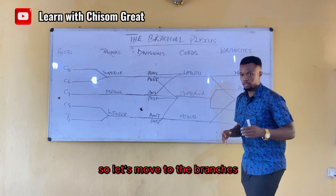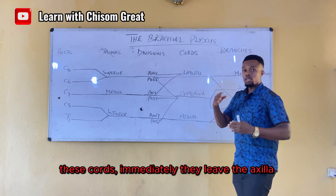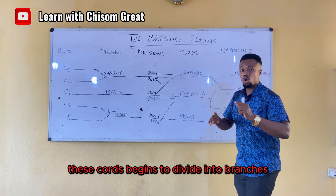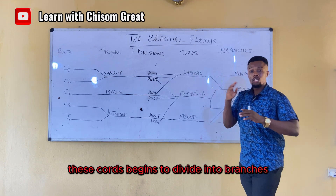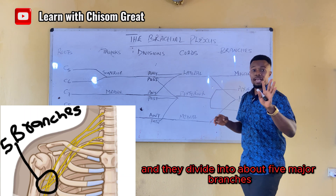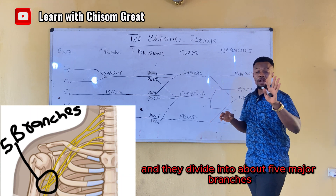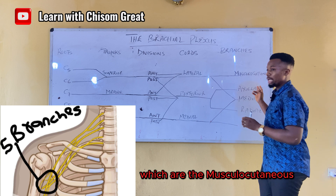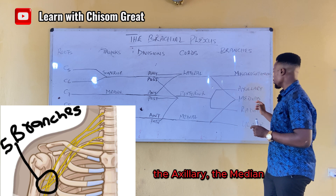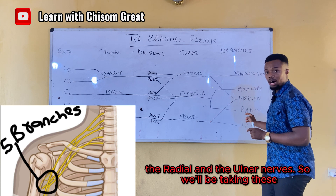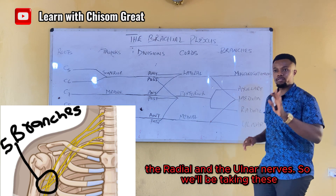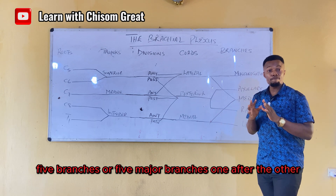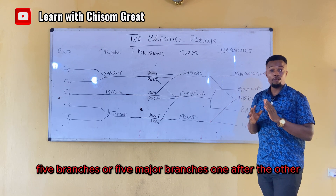Now let's move to the branches. These cords, immediately after leaving the axilla, begin to divide into branches — about five major branches — which are the musculocutaneous, the axillary, the median, the radial, and the ulnar nerves. We will be taking these five major branches one after the other.